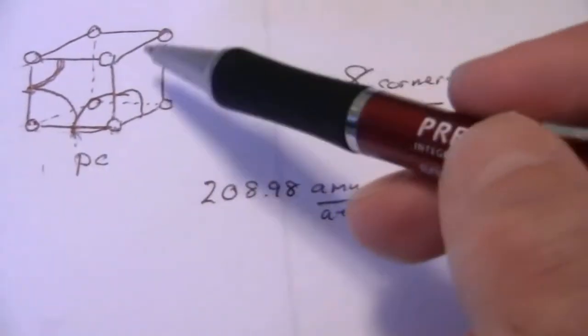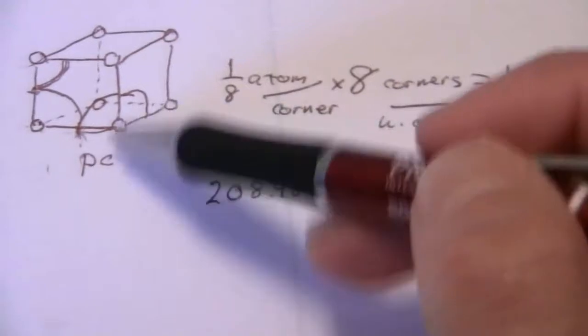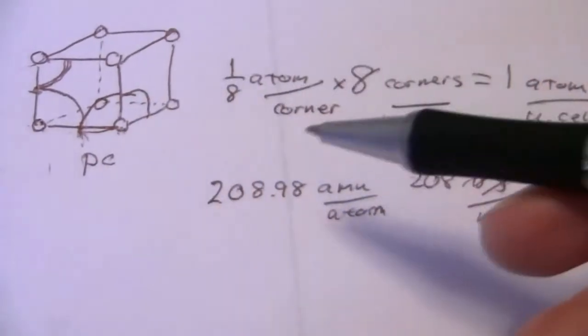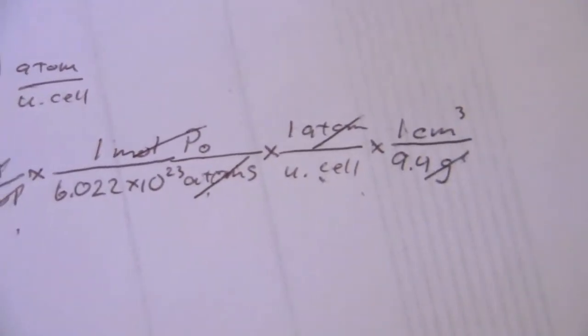This is a cube. All the sides are the same. Length, width, height. Length times width times the height gives me the volume. So if I take the cube root of that volume, it will give me the length in centimeters.